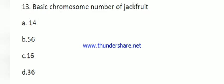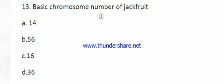Question number 13: basic chromosome number of jackfruit. The options are 14, 56, 16, and 36. Jackfruit is generally a tetraploid, that's why 2n = 4x = 56. Therefore the basic chromosome number, represented as X, is 14. The right answer is 14.